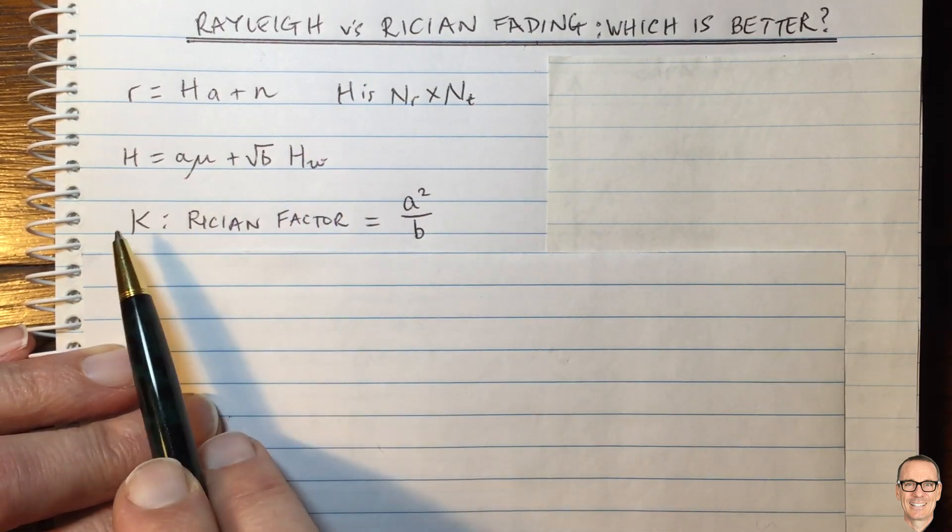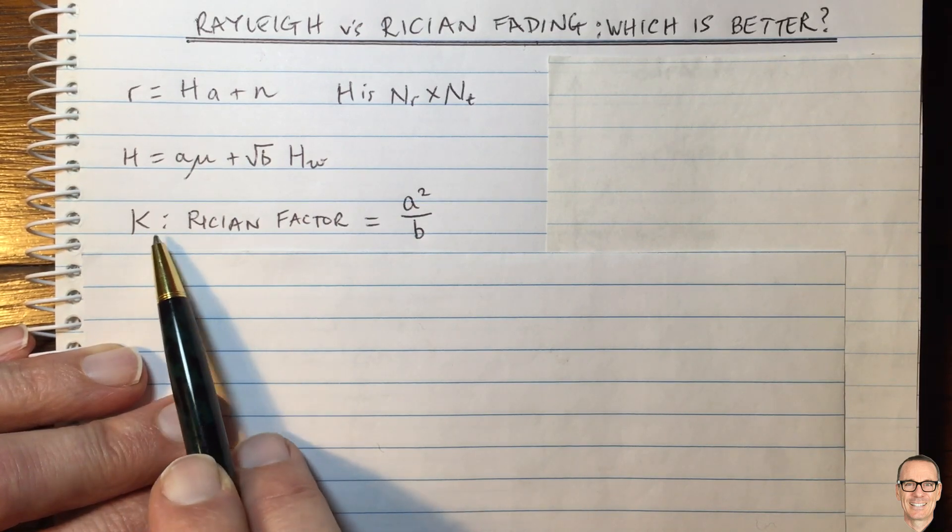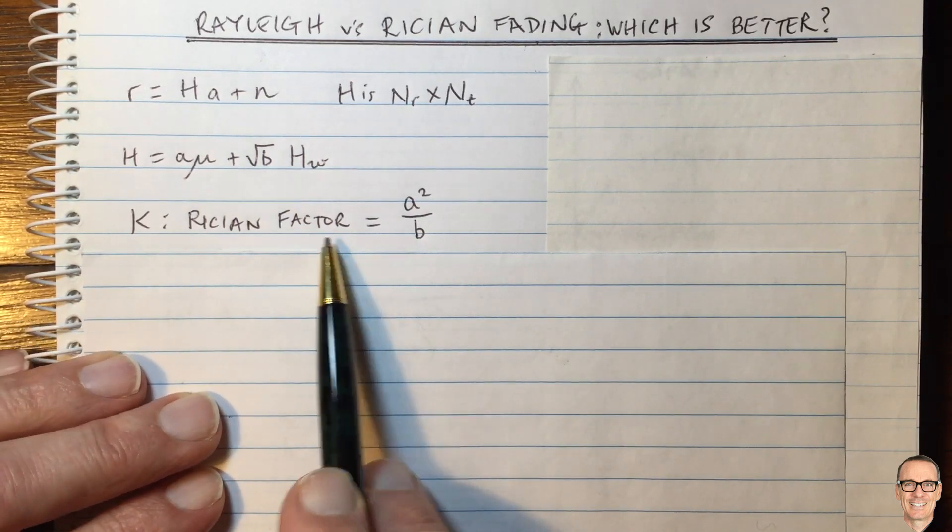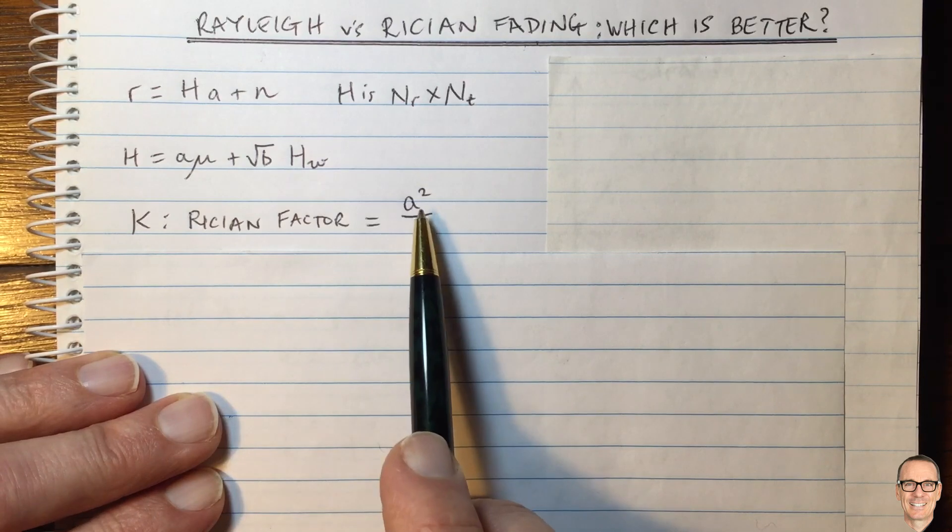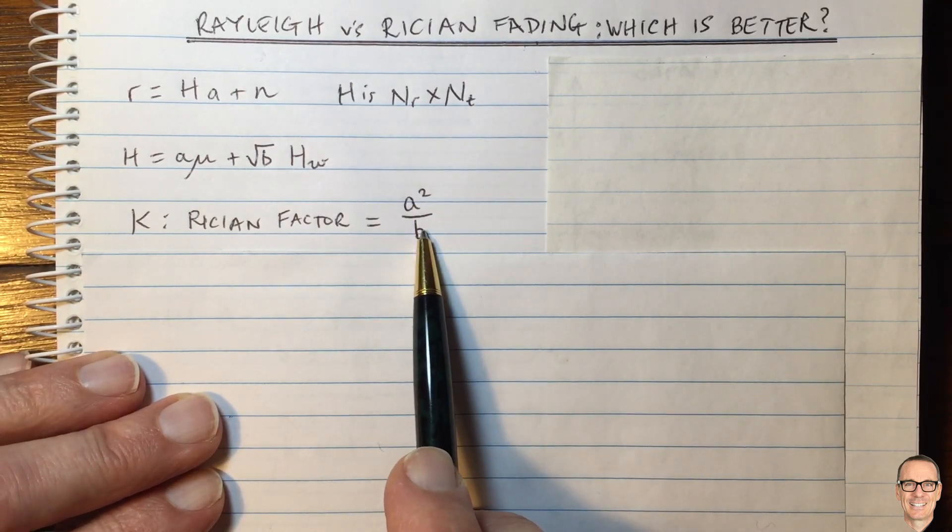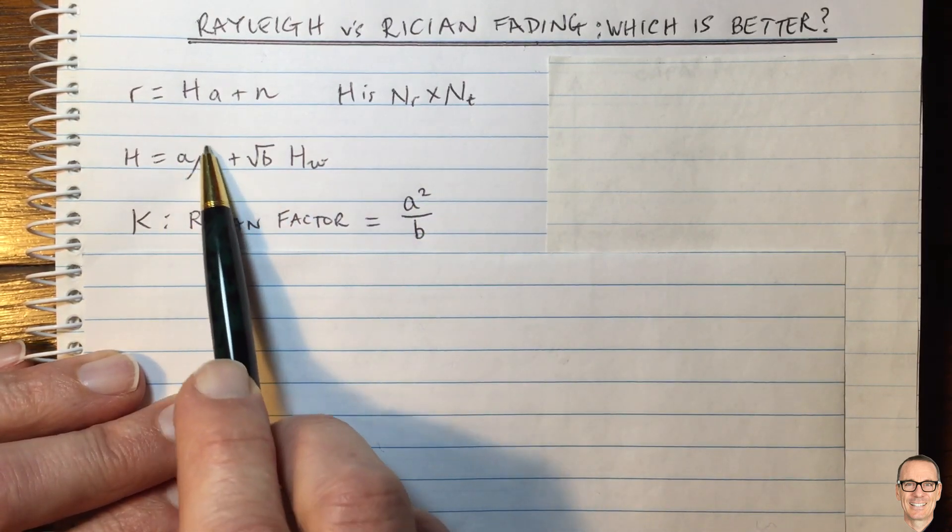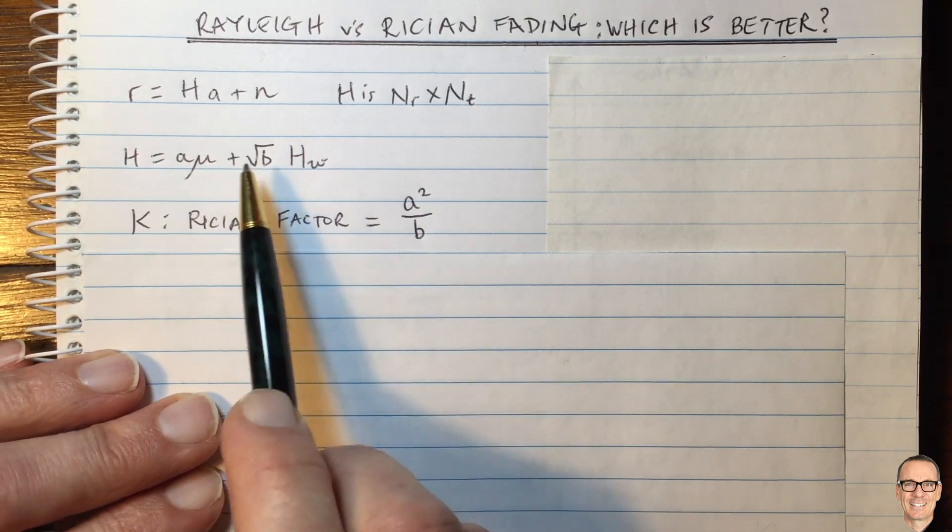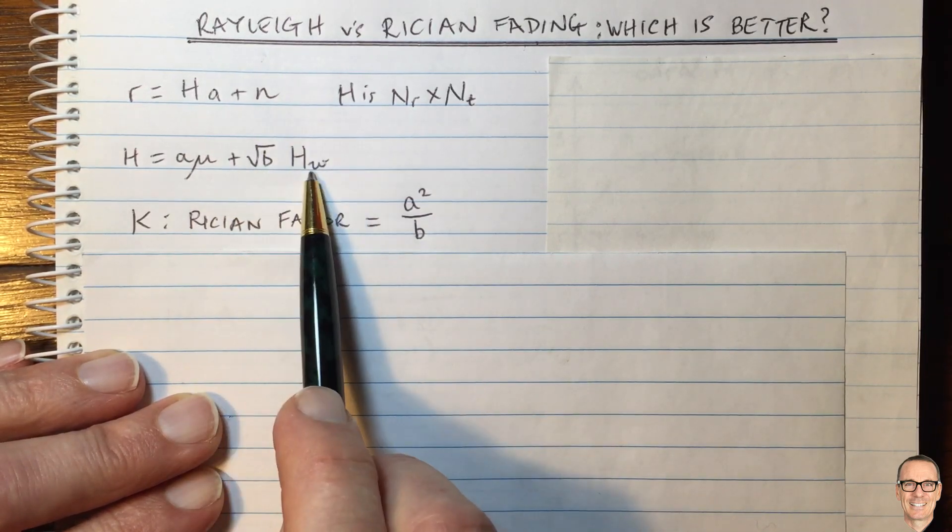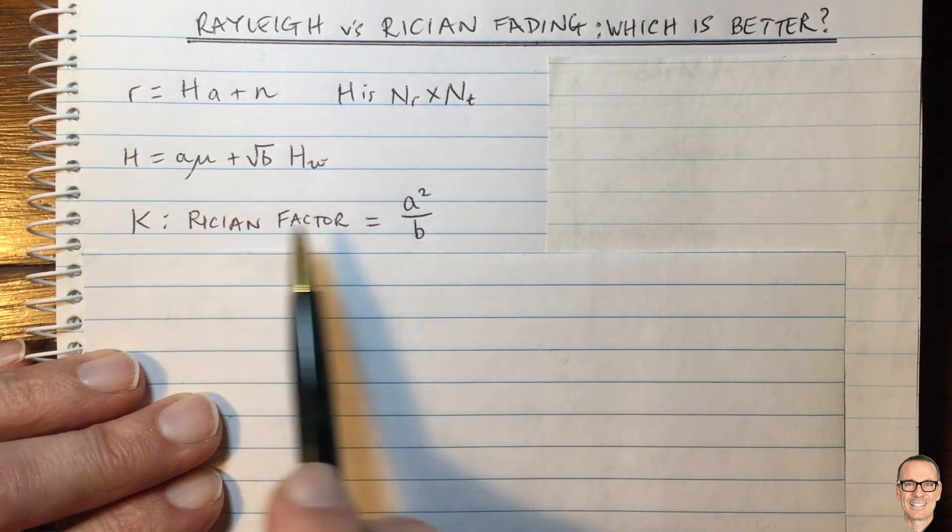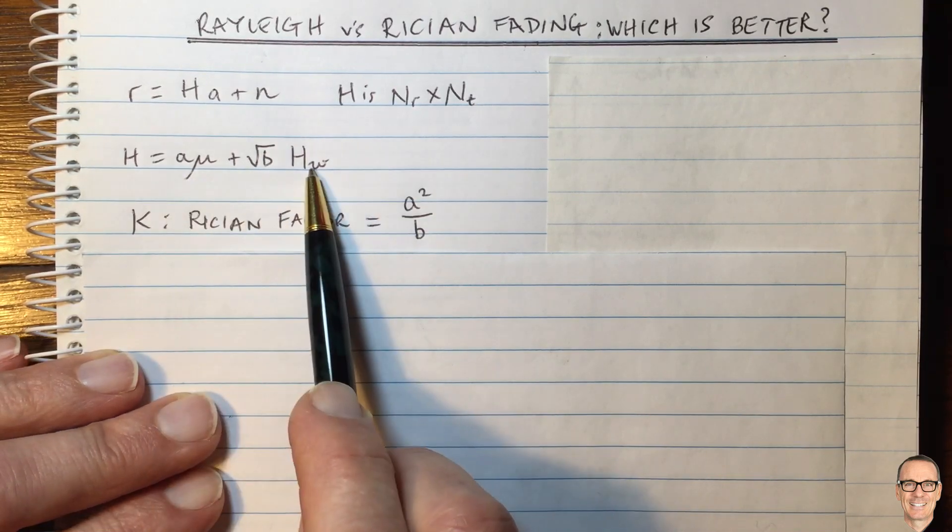And we characterize this by the common K factor or K Ricean factor, where for this model here it equals A squared over B. It's the power in the dominant path divided by the power in the multiple path.